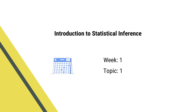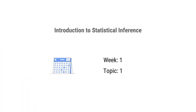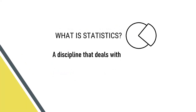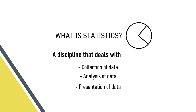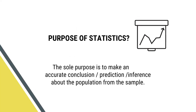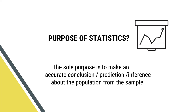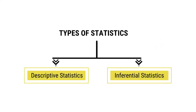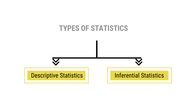Our first topic is the Introduction to Statistical Inference. Let us first discuss what is statistics. It is a discipline that deals with collection of data, analysis of data, and presentation of data. The purpose of statistics is to make accurate conclusions, predictions, or inferences about a population from the sample. There are two types of statistics: one is descriptive statistics, the other one is inferential statistics.